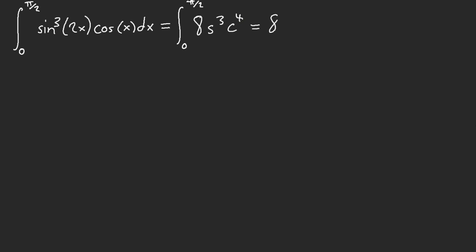And now this is going to equal c4 c squared—I'm sorry—1 minus c squared, and then s. And let u equal cosine of x.